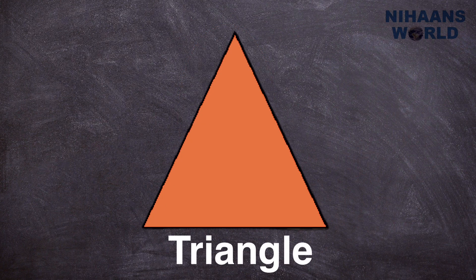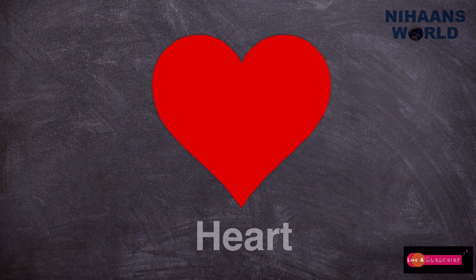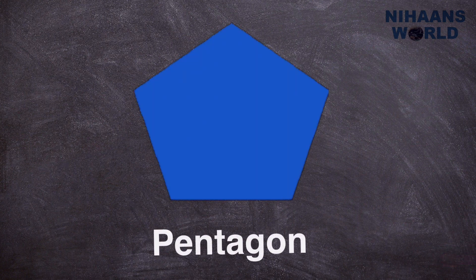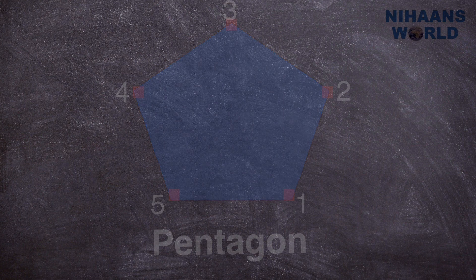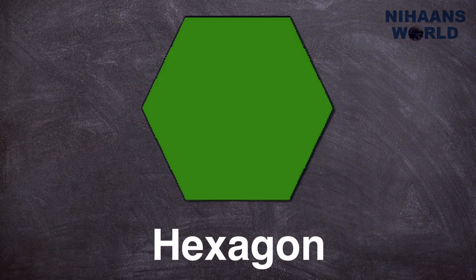Triangle. A triangle has 3 sides and 3 vertices. Heart. Heart shape resembles our organ heart and that is why so named. Pentagon. A pentagon has 5 sides. Hexagon. A hexagon has 6 sides.